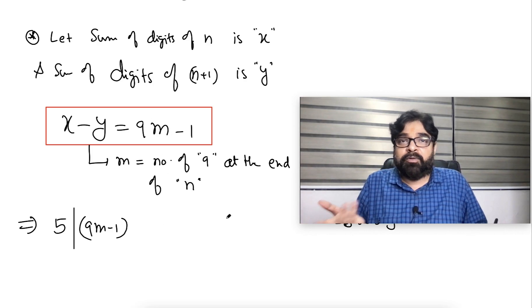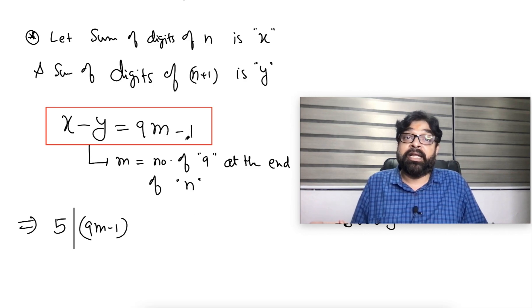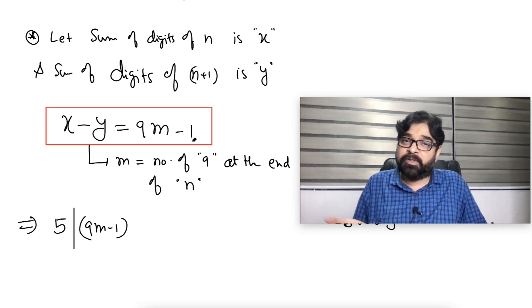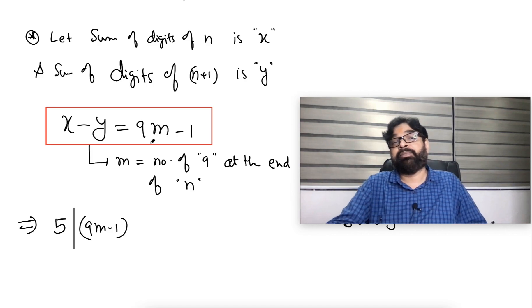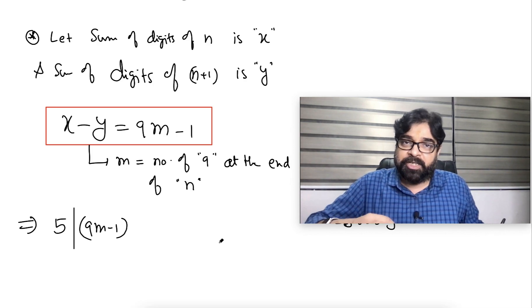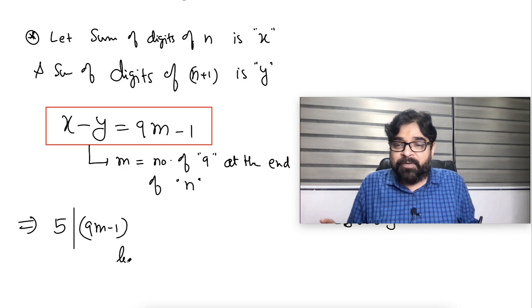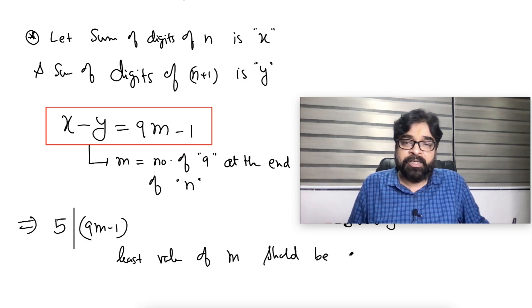So let us put different, different values. m equal to 0, impossible. m equal to 1, 9 minus 1, 8, 8 is not divisible by 5. m equal to 2, 18 minus 1, 17, not divisible. 3, 27 minus 1, 26, not divisible. 4, 36 minus 1, 35, divisible. I am not saying this, some other value of m, but that will be bigger value. I want the smallest integer. So surely, least value of m should be 4.